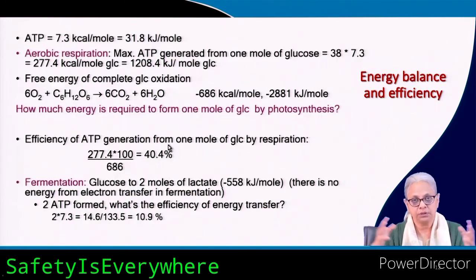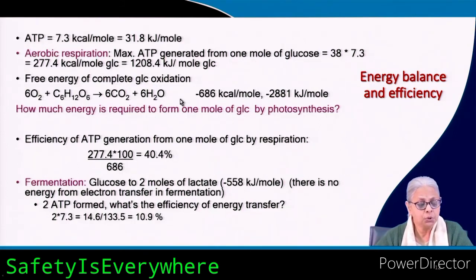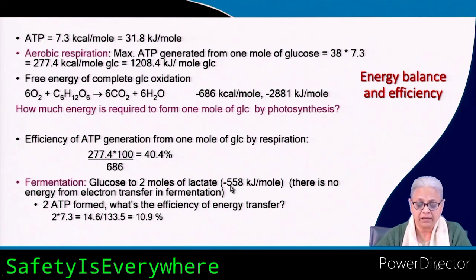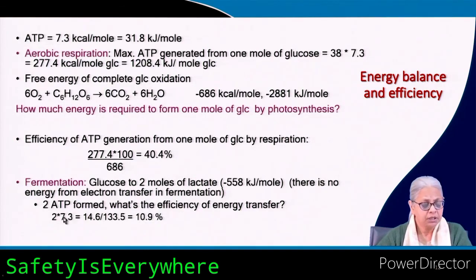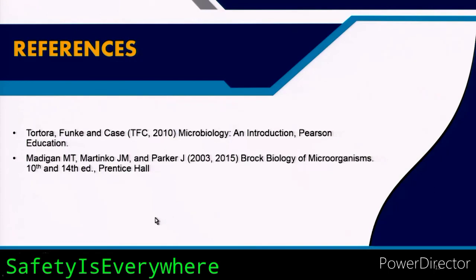Nature's efficiency in generating 38 ATP from the available free energy of glucose is about 40.4% — pretty good from nature's perspective. For fermentation where glucose is converted to lactate, two ATP are also formed. The chemical reaction of one glucose going to two moles of lactate has a ΔG° of −558 kilojoules per mole. The efficiency of energy transfer in terms of ATP only is very poor — close to 11%. We will look at other aspects of the energetics of microbial reactions in the next topic.